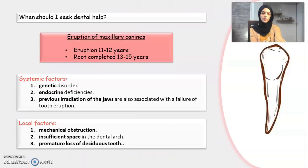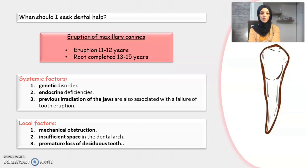Eruption time is important — I should know the exact eruption time to identify problems. The eruption time of the maxillary canine starts around age 11 to 12, and root completion occurs between 13 to 15 years. I should start being concerned if the tooth has not started erupting after age 12.